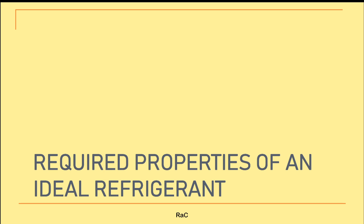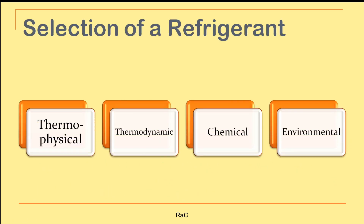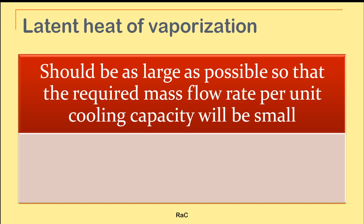Today in this session we will be learning what the different required properties of an ideal refrigerant are. There are thermophysical, thermodynamic, chemical, as well as environmental properties — these are the major classifications before selecting an appropriate refrigerant for a refrigeration or air conditioning application.